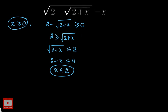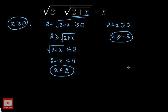There is also a third condition: the inner term 2 plus x must also be greater than or equal to zero, giving x ≥ −2. Since we already have x ≥ 0 from the first condition, the condition x ≥ −2 is automatically satisfied. So the domain is 0 ≤ x ≤ 2. Keep this domain in mind — our value of x has to be between 0 and 2.